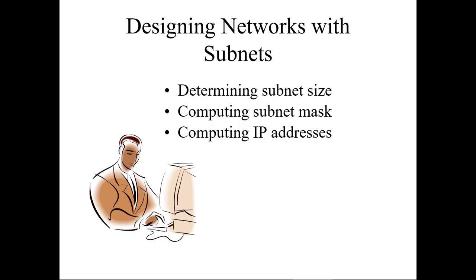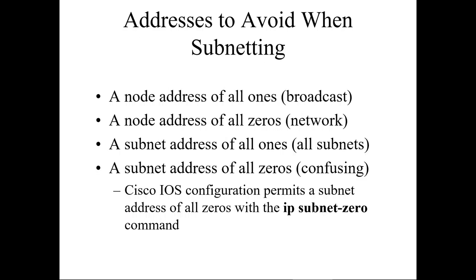Let's do some designing for our subnetworks. How do we determine our network size? How do we figure out our computing subnet mask and IP addresses? If we're looking at a group of addresses that contain all ones in the host portion, that's a broadcast. If it's all zeros, it's going to be a network address. Network is a specialized address we don't get to use — that's part of summarization. Broadcast is the same thing — all ones in the node portion for our hosts.